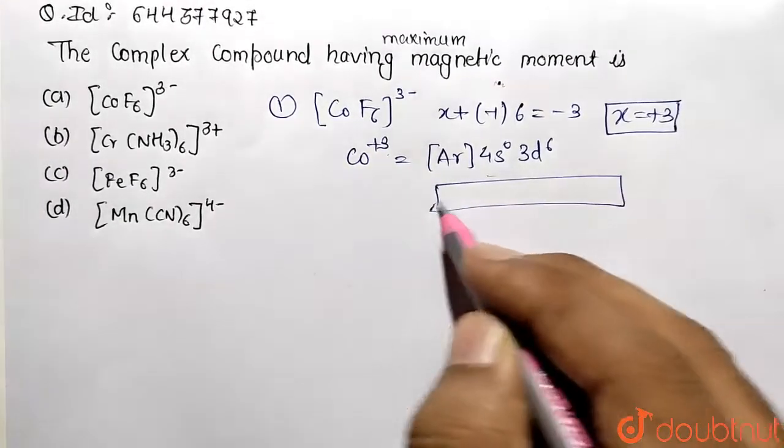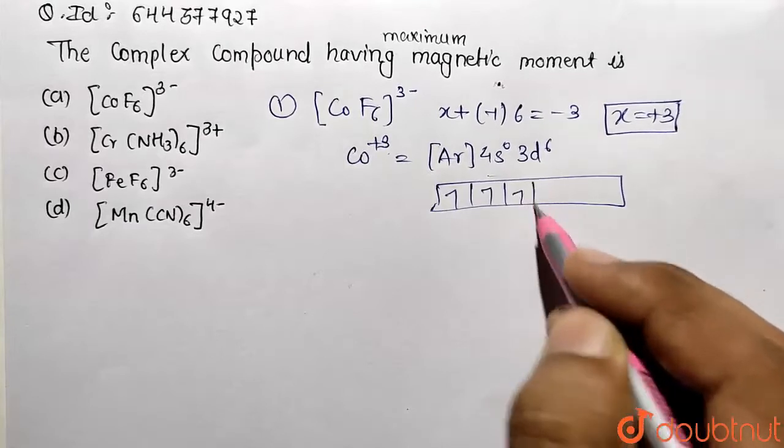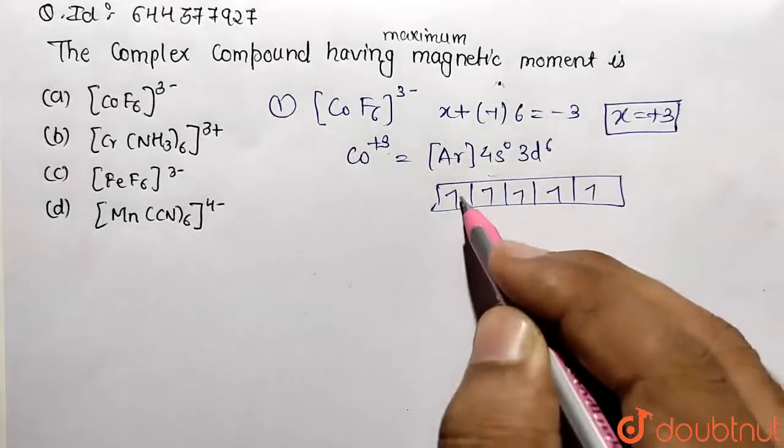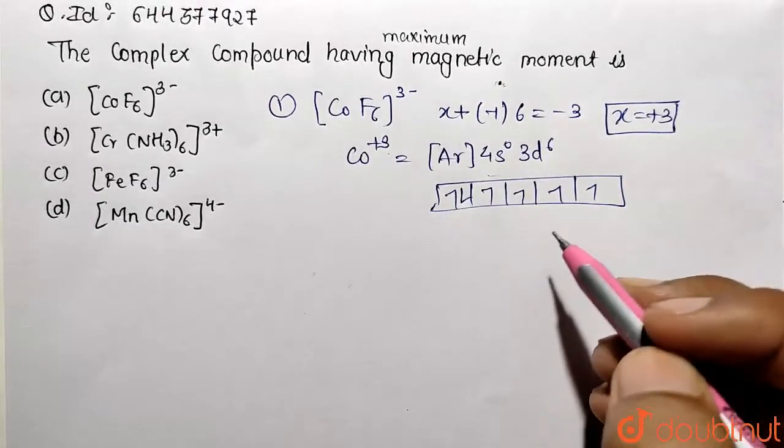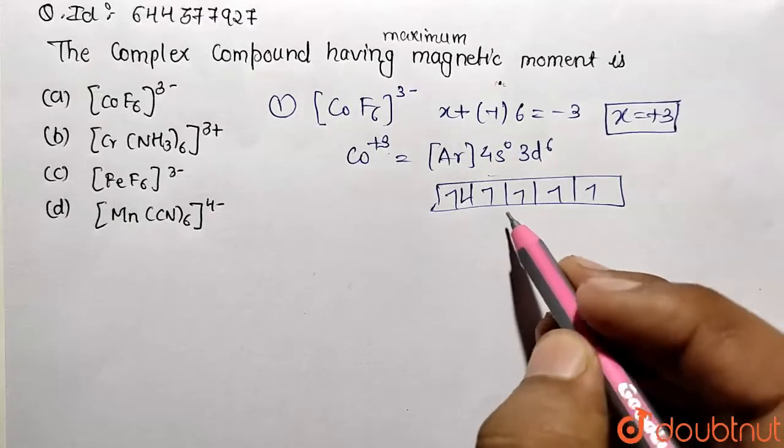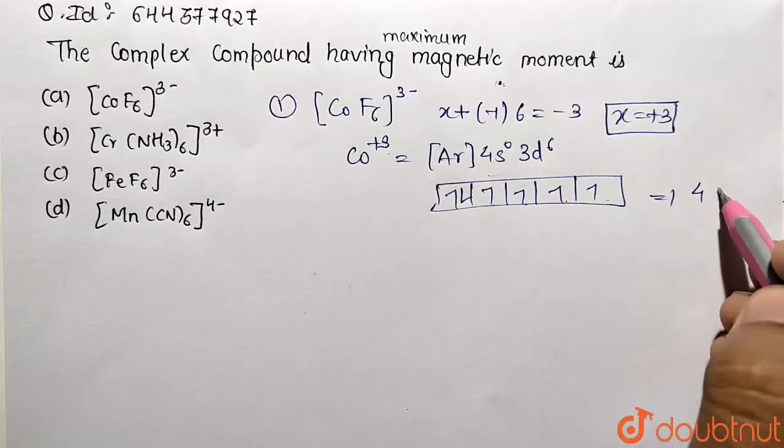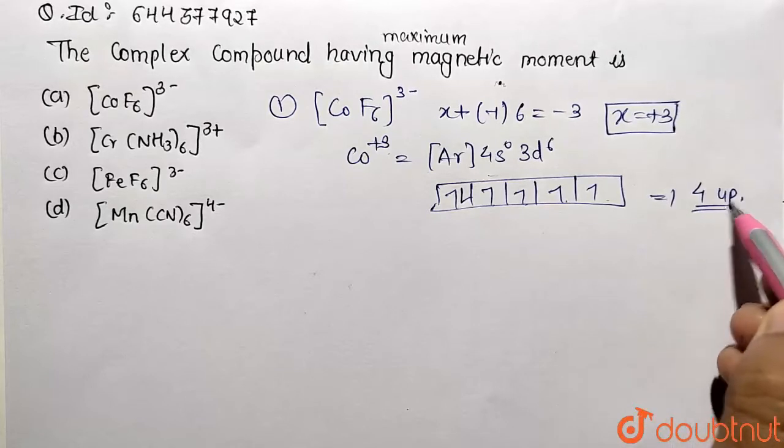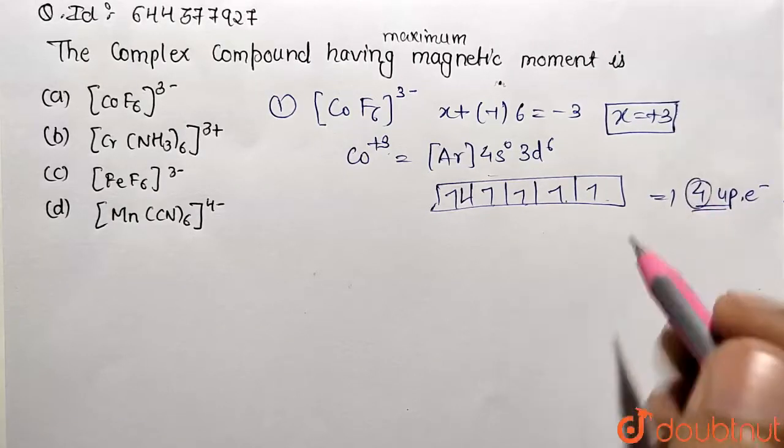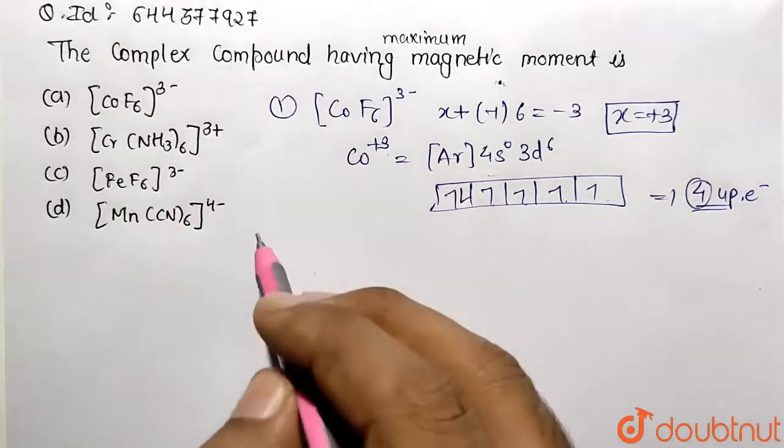How do I represent 6 electrons? This is 1, 2, 3, 4, 5, 6. So this is how I have represented 6. The number of unpaired electrons present here is 1, 2, 3, 4. So 4 unpaired electrons are present. Let's go with the second complex.